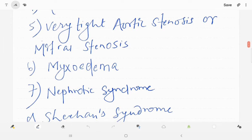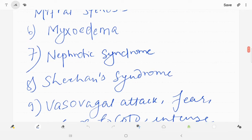Now myxedema. Nephrotic syndrome. So myxedema is one of the example where anemia is very slight.